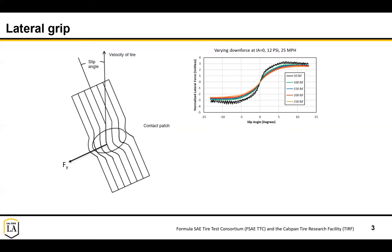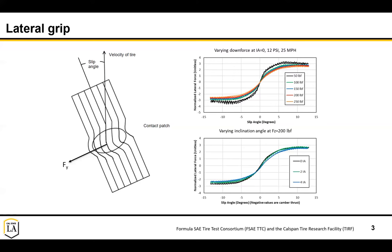Other things can affect grip as well, such as camber. Sometimes you'll see the front tires cambered in slightly towards the vehicle to help with grip - this is called camber thrust. Looking at our tires, we see that with zero inclination we actually have the most grip. So these tires aren't exhibiting that camber thrust benefit in the case of the tires we run.